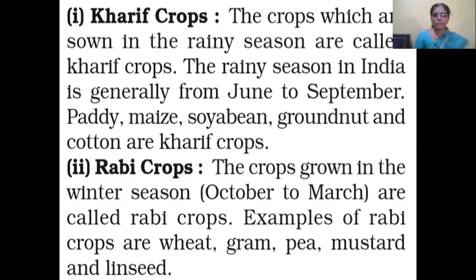Kharif crops are the crops which are sown in the rainy season. In India, the rainy season is generally from June to September. Examples of Kharif crops are paddy, maize, soya bean, groundnut, and cotton.